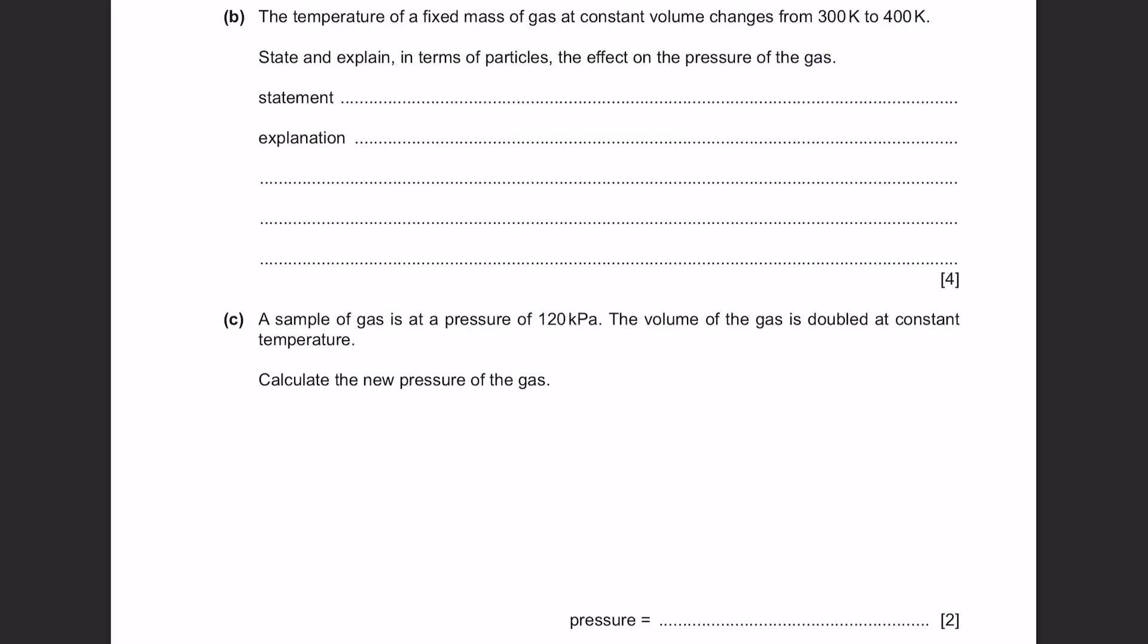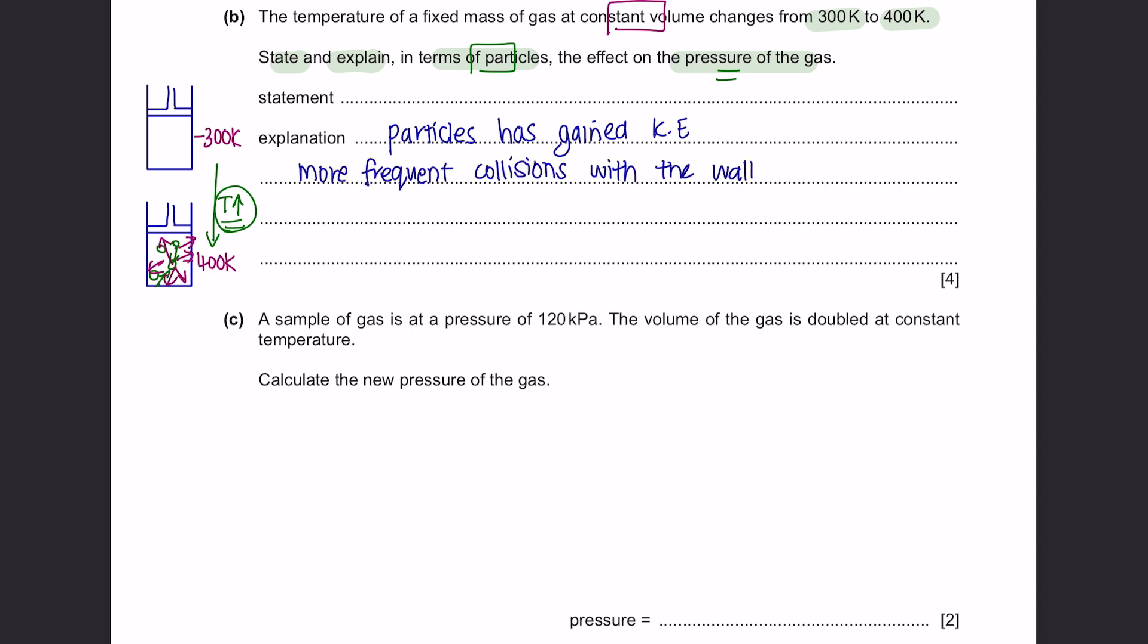Question B. The temperature of a fixed mass of gas at constant volume changes from 300 Kelvins to 400 Kelvins. State and explain in terms of particles the effect on the pressure of this gas. So at a constant volume, the temperature changes from 300 Kelvins to 400 Kelvins. In terms of particles, we want to know how the pressure changed. When the temperature gets higher, it means that the particles right now have gained more kinetic energy. So the particles will now collide with the walls more frequently. When there are more frequent collisions of particles with the wall, there will be a larger force created. Pressure can be calculated by the formula force over area. So if there is a greater force produced, it means that the pressure will also increase. So for the statement, you can say that the pressure increases.